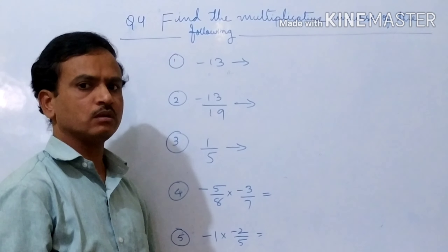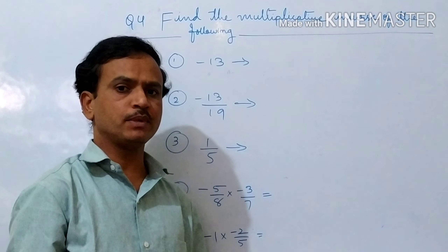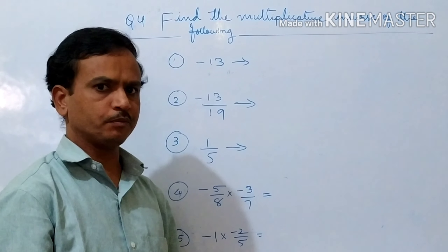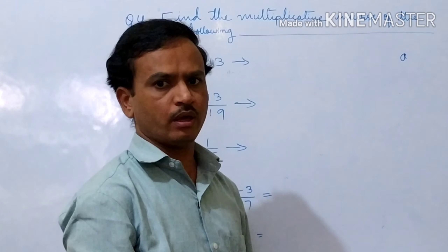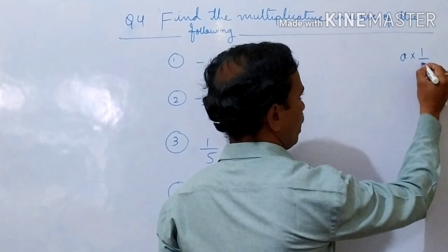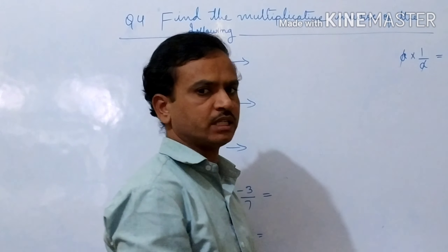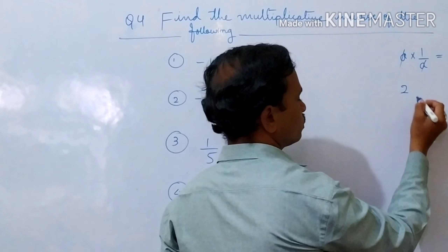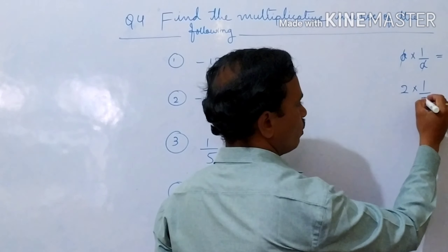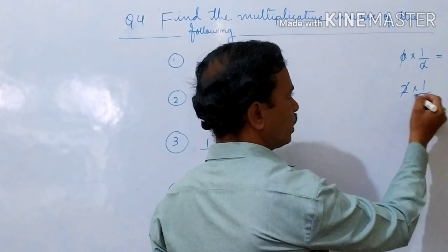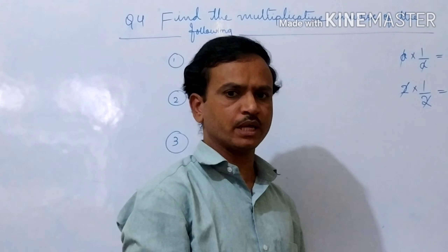Find the multiplicative inverse of the following. First we should know the multiplicative identity, which is 1. For example, the multiplicative inverse of A is 1 by A, because A times 1 by A equals 1. The multiplicative inverse of 2 is 1 by 2, because 2 times 1 by 2 equals 1. So we must get the answer 1, because 1 is the multiplicative identity.